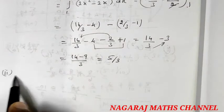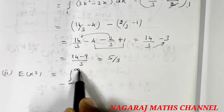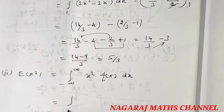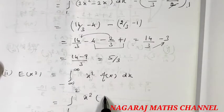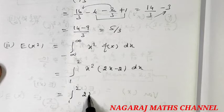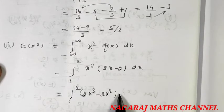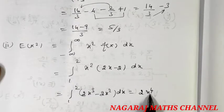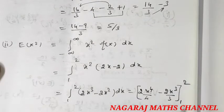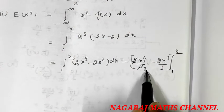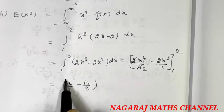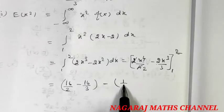Now E(x squared) equals the integral from minus infinity to plus infinity of x squared times f(x) dx. With the limits 1 to 2, we integrate x squared times (2x minus 2) dx, giving 2x cubed divided by 3 evaluated with upper limit 2 and lower limit 1. At upper limit 2: 16 divided by 2 minus 16 divided by 3. At lower limit 1: 1 divided by 2 minus 2 divided by 3.